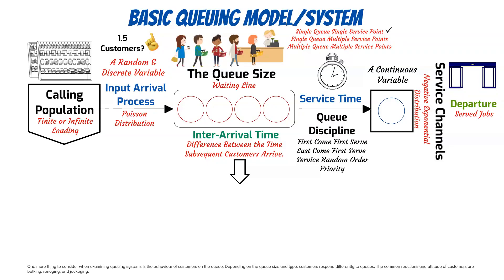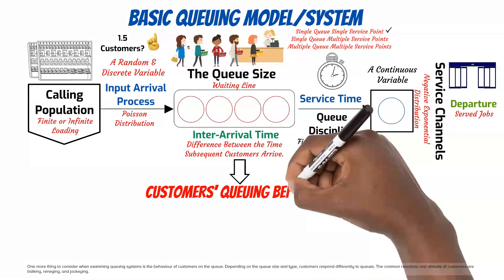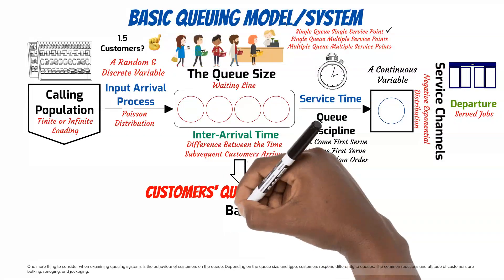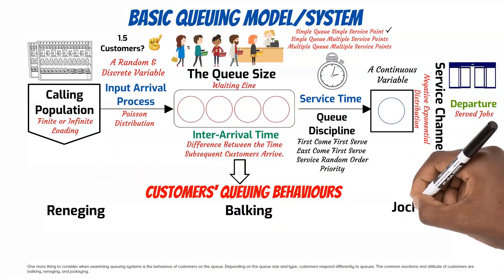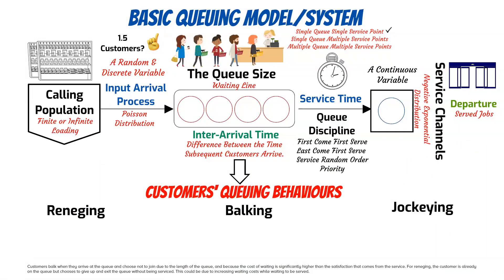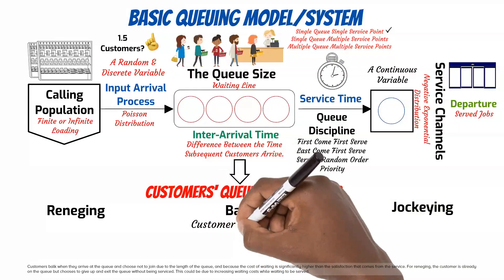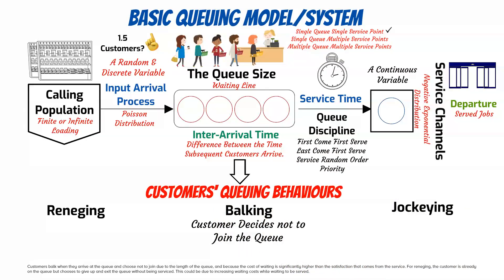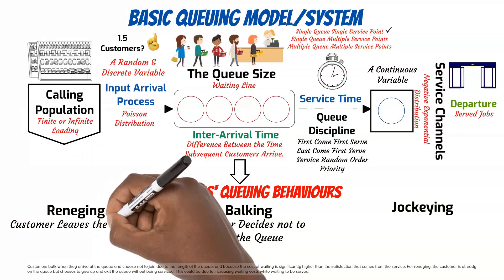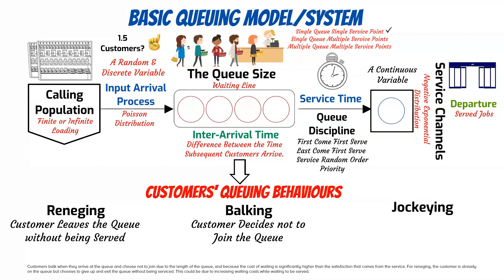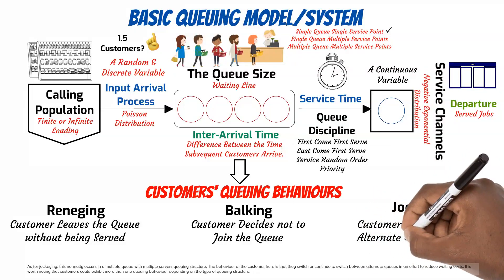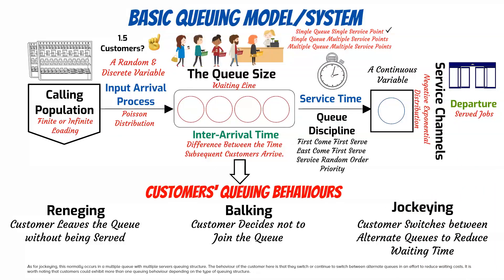One more thing to consider when examining queuing systems is the behavior of customers in the queue. Depending on the queue size and type, customers respond differently to queues. The common reactions are balking, reneging, and jockeying. Customers balk when they arrive at the queue and choose not to join due to the length of the queue and because the cost of waiting is significantly higher than the satisfaction gained from the service. For reneging, the customer is already on the queue but chooses to give up and exit without being serviced, possibly due to increasing waiting costs. Jockeying occurs in structures with multiple queues and multiple servers, where the customer switches between alternate queues to reduce waiting costs. Customers could exhibit more than one queuing behavior depending on the type of queuing structure.